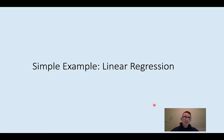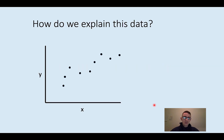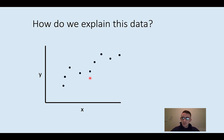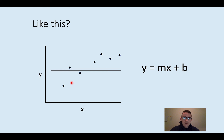For a simple example, a good way to build intuition about the challenge of parameter estimation is just with linear regression. Let's say we have some linear-looking data we've collected — some variable x and some variable y — and we want to see if we can fit a line to this data in a way that's useful for explaining it and also for making predictions about what y values would look like for new values of x.